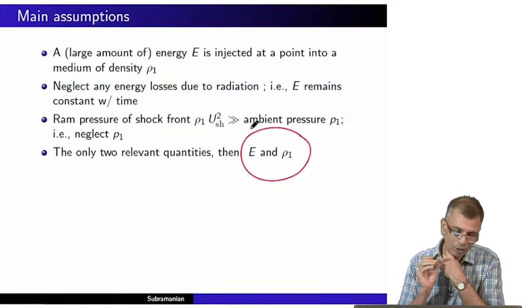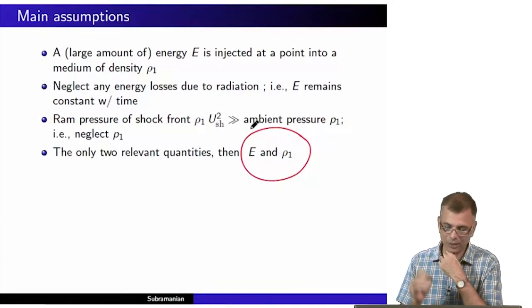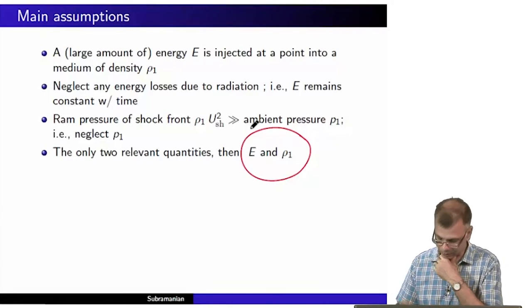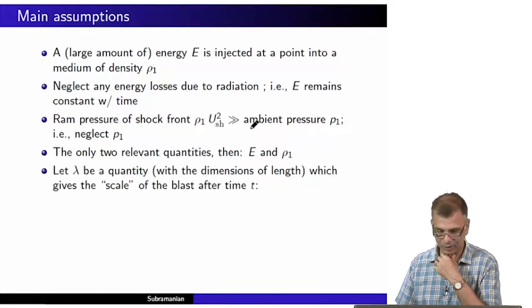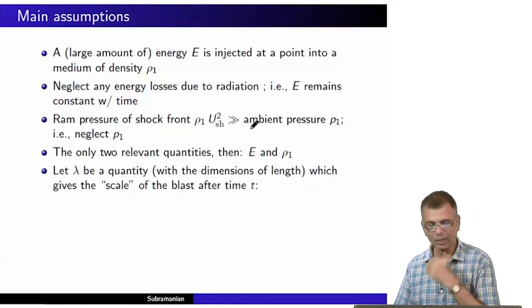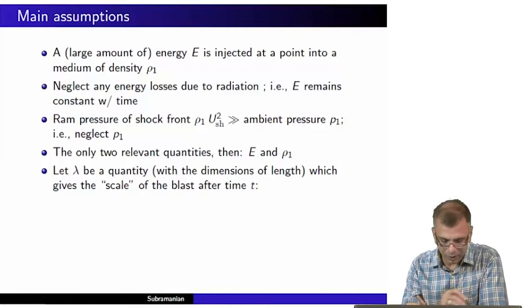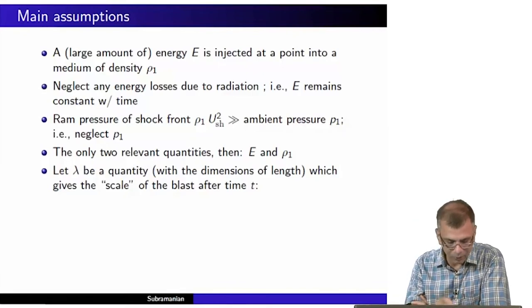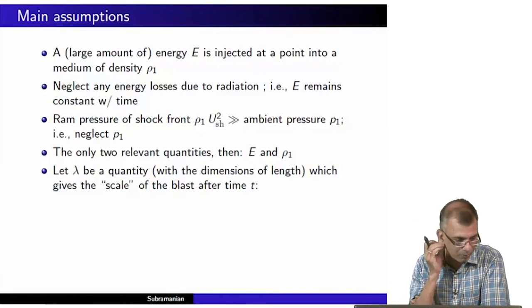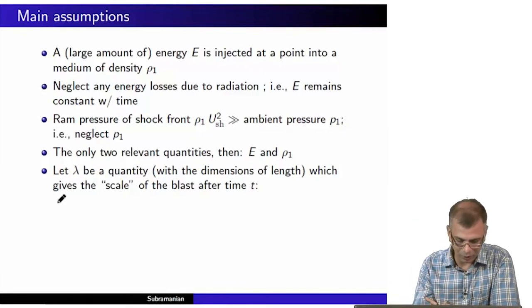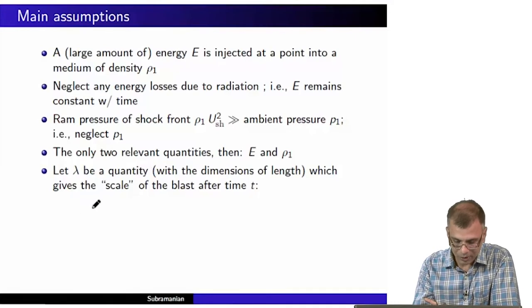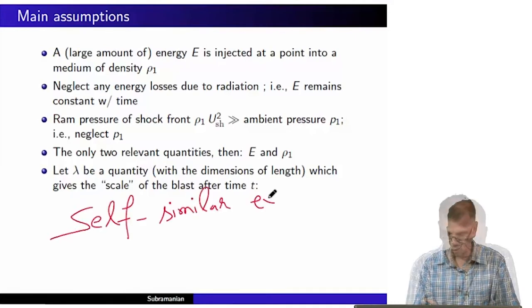Therefore, there are only two relevant quantities: E and ρ₁. P₁ doesn't matter, and E does not decrease with time. This is very important — this is one of the main building blocks on which this brilliantly simple theory is constructed. So there are only two relevant quantities, E and ρ₁. We also have time t, so we are left with the task of constructing a quantity λ with dimensions of length from E, ρ₁, and t.